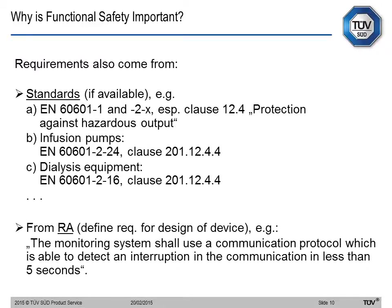We may also have a specific risk assessment defined by the legal manufacturer. For example: the monitoring system shall use a communication protocol which is able to detect an interruption in communication in less than five seconds. This particular timing of five seconds comes from a risk assessment, and by applying functional safety, we know what to look for here.